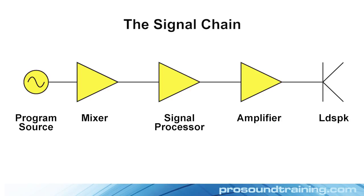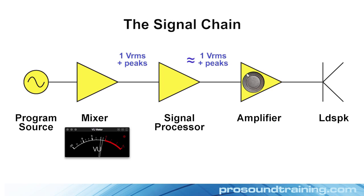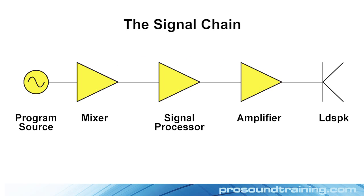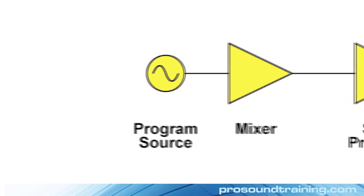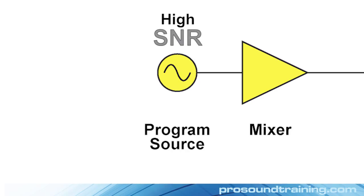Part 1 gave a flyover for establishing the gain structure of a sound system. The quick recap is that mixers are designed to output an average signal voltage of about 1 volt RMS. Post-mixer processors modify the signal without changing the level much. The amplifier is then adjusted for the desired playback level from the loudspeakers. If you do it this way, the meters will move on your mixer and the residual electronic noise at the system output will be inaudible to the audience. This assumes that the input signal to your system has a high signal-to-noise ratio — this is vital, because if it doesn't, there's no way to restore it later. Garbage in, garbage out.